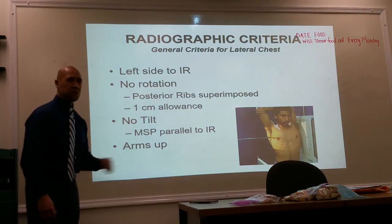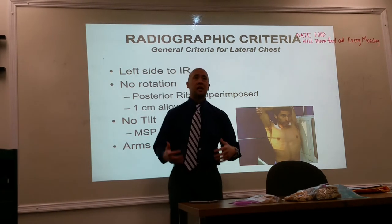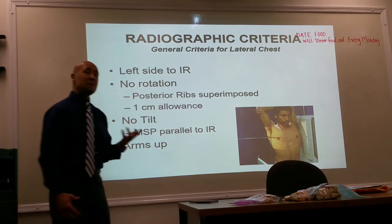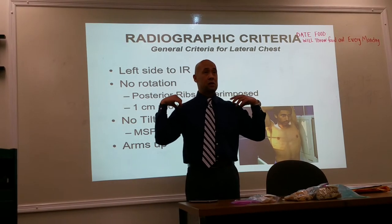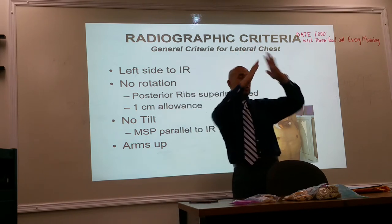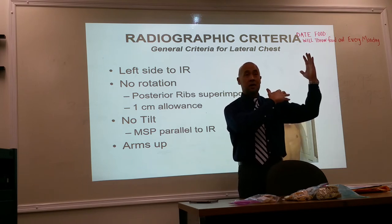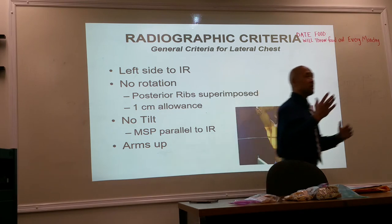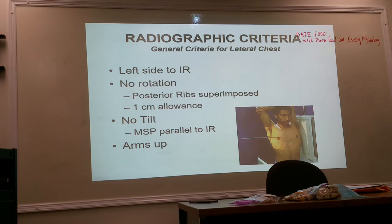When doing a lateral chest, you place the patient's left side up against the board with no tilt. No tilt means that some patients may be broader in the shoulders — when the chest is up against the board, don't press the hip up against the board too, because that creates tilt. The patient still has to remain perpendicular to the image receptor. Even if they have broad shoulders and there is some OID at mid-thorax, that's okay.